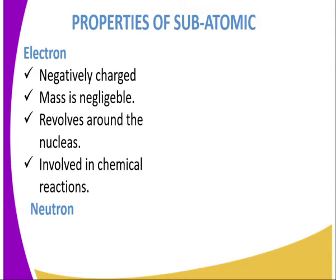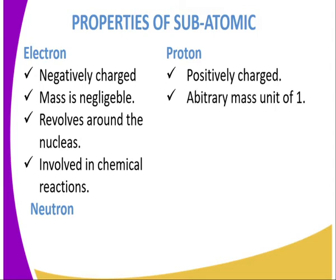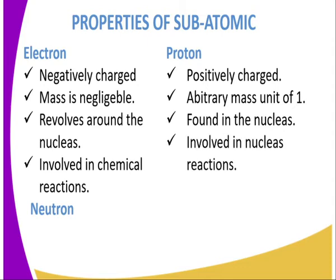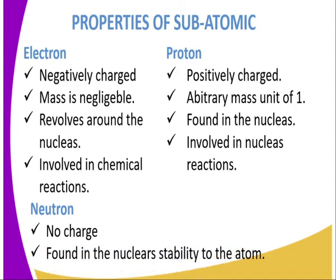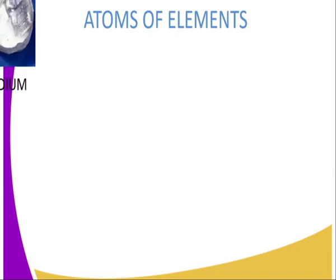Electrons are the particles which take part in chemical reactions, and we will look at that later. On the other hand, protons are positively charged, have an arbitrary mass unit of one, are found within the nucleus, and are involved in nuclear reactions — that is, the production of nuclear power. Neutrons are neutral — no charge — but they play a very important role: they are found within the nucleus and they provide stability to the atom.